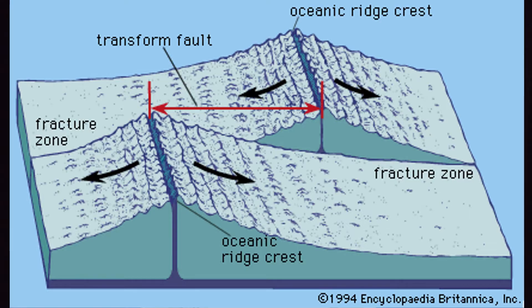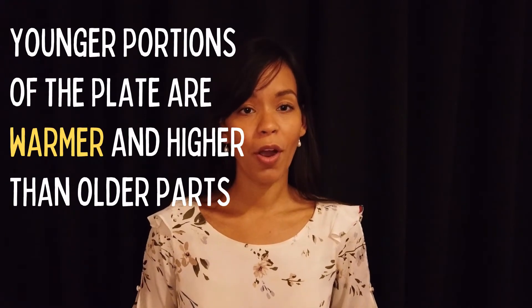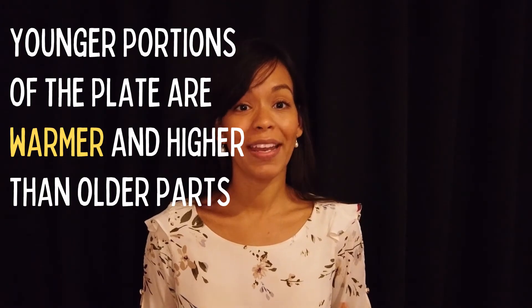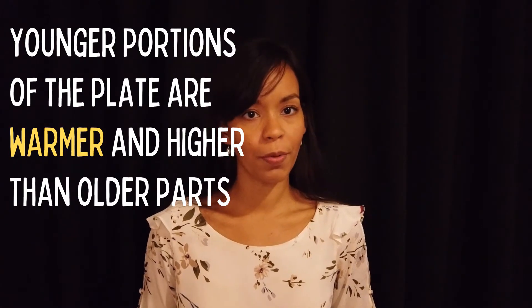Opposite sides of fracture zones have different elevations because they formed by seafloor spreading at different times, so they've had different amounts of time to cool and subside after forming. Younger parts of the plate are warmer and higher than the older parts.